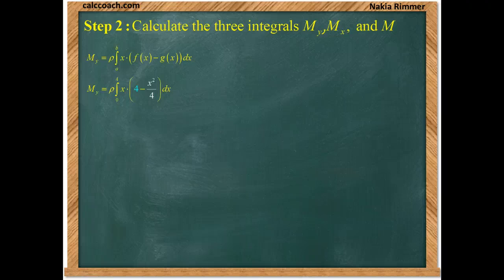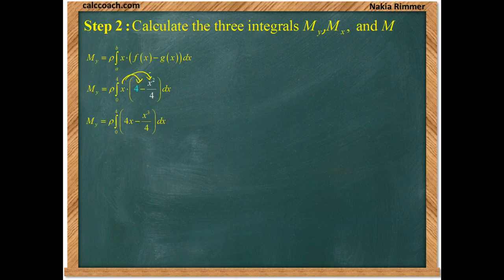Since we decided to do only the first quadrant. Distribute the x in. So, 4 times x. And x times x squared over 4 becomes 4x minus x cubed over 4. And we're integrating from 0 to 4.